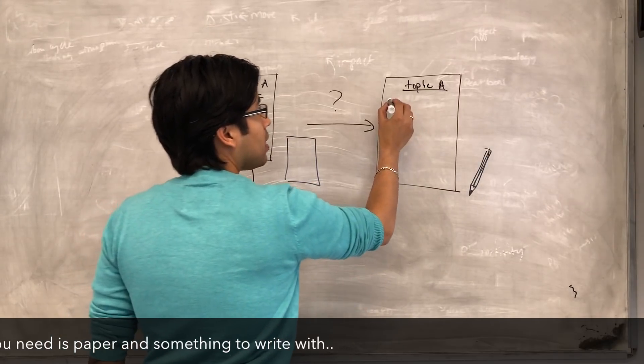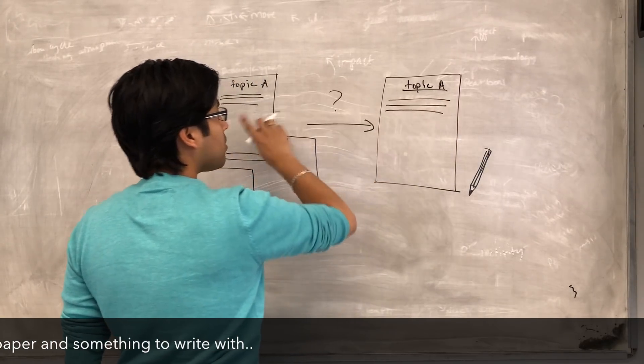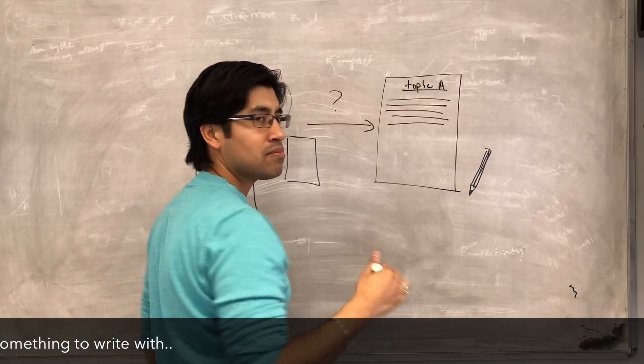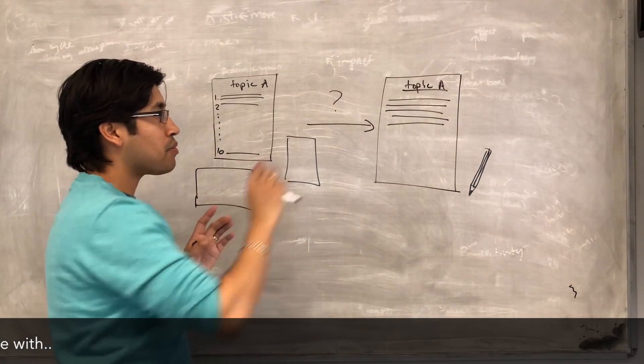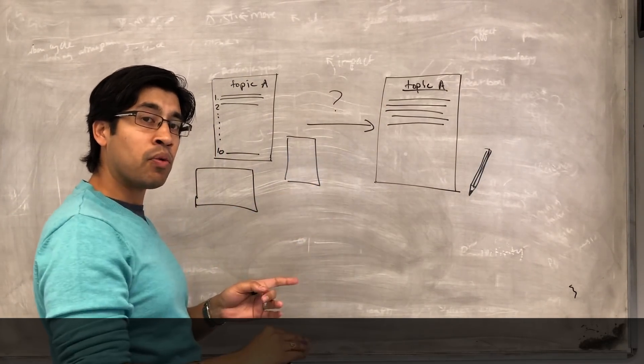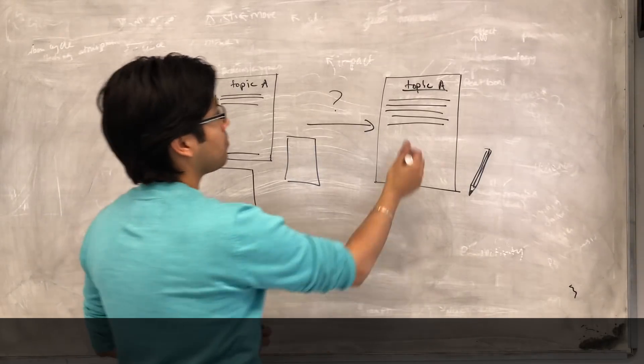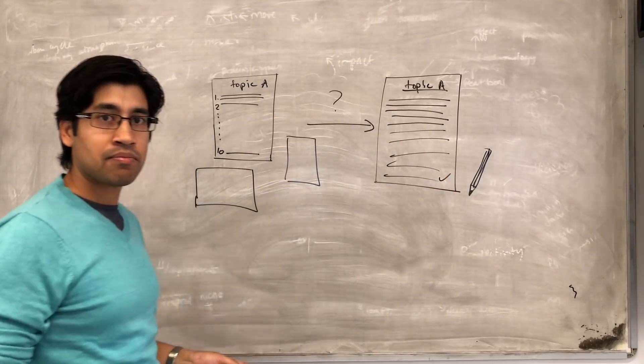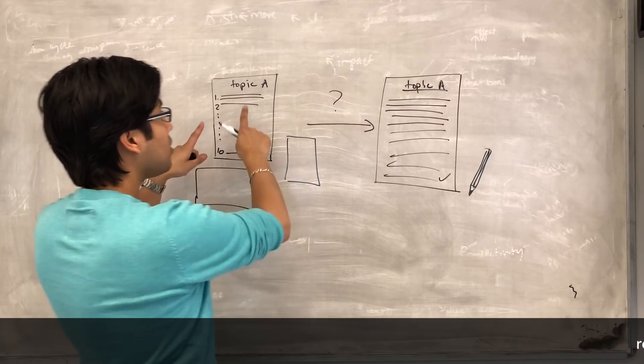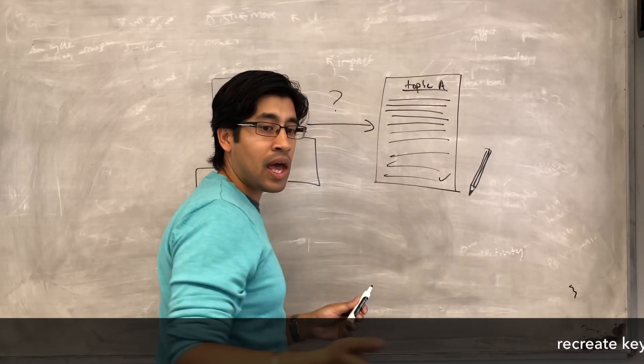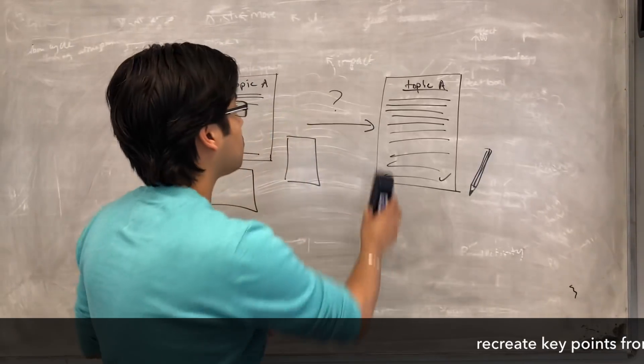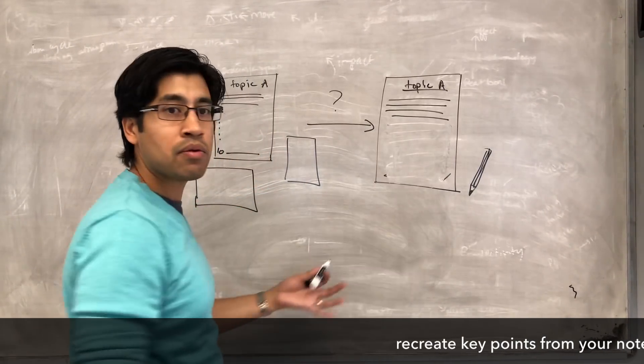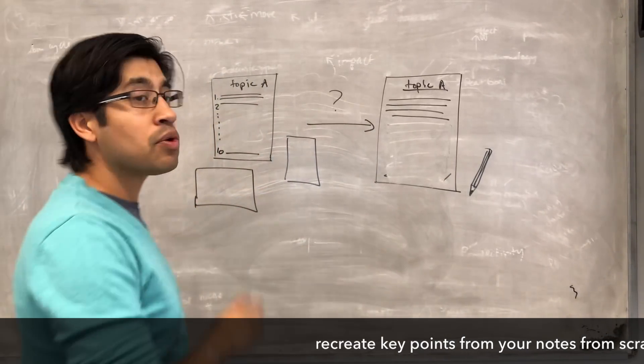If this is topic A or whatever. Topic A, if I can recreate this page from scratch, not word for word, but all the key points are there, they're all in the right order, all the key terms are there. If I can do that, then I'll revise it. Now what's likely to happen is, you're going to try this the first time, and you might get to about one third of the way down, and you'll realize that you're stuck.